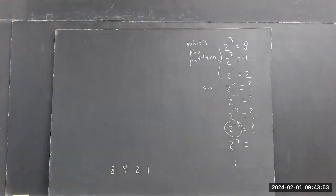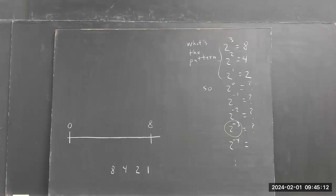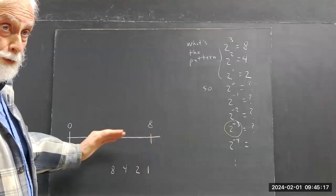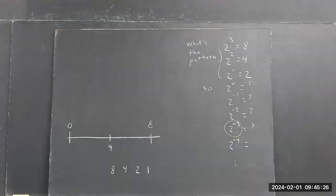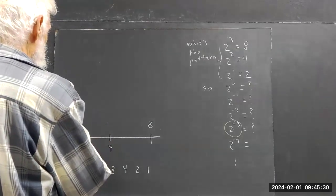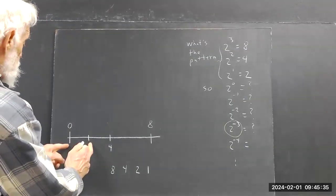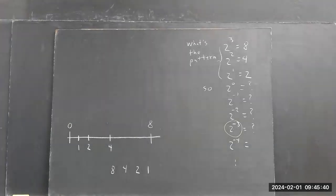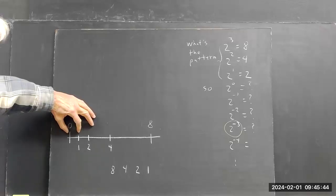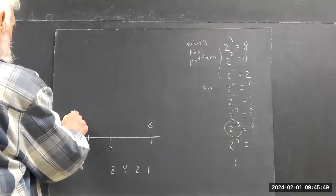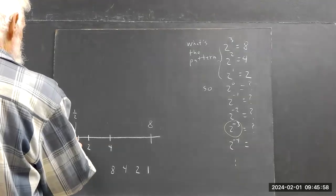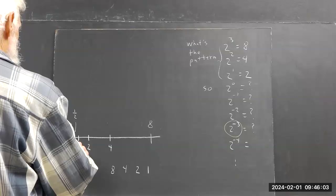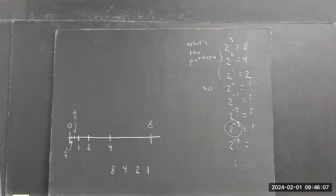If you divide one by two, let's discuss this. Here's zero, here's eight — this is a number line. If we cut eight in half, we get four. If we cut four in half, we get two. If we cut two in half, we get one. Now if we cut one in half, then we get one half. If we cut that in half, we get one fourth.